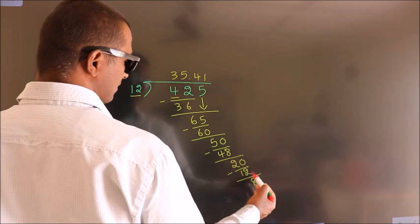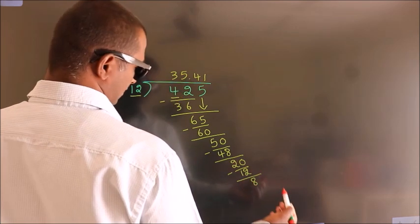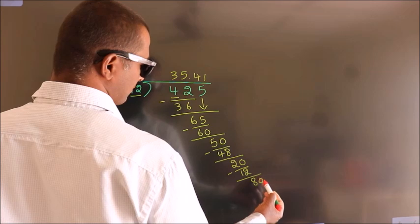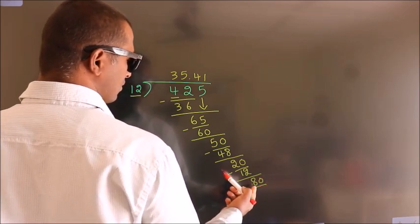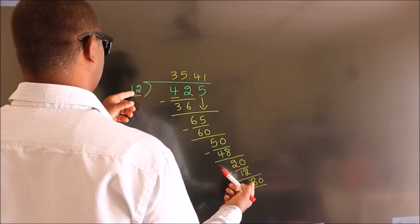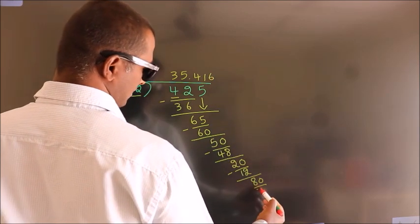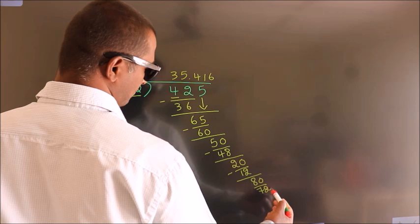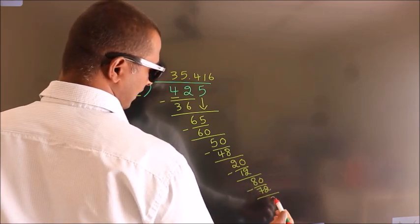After this, we already have the decimal, so directly take 0. So 80. Now we subtract and get 8.